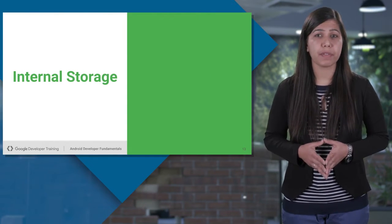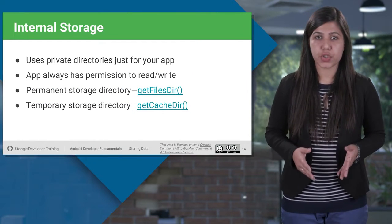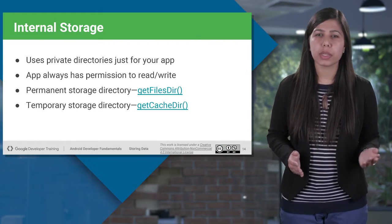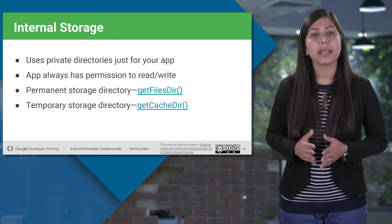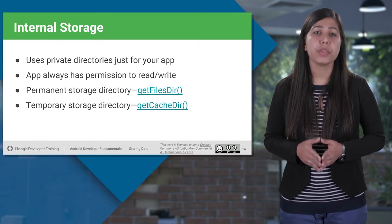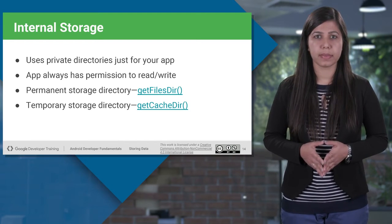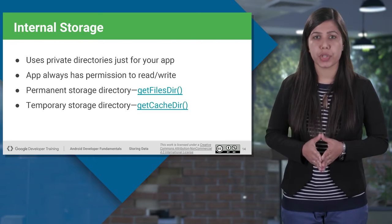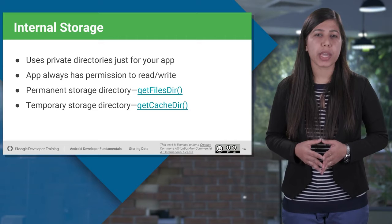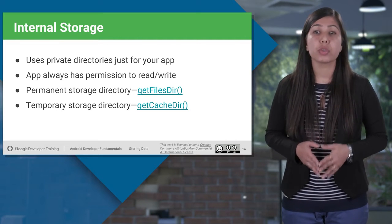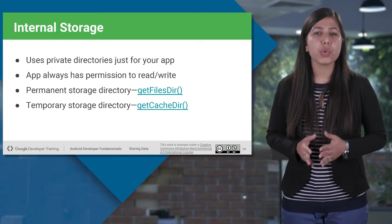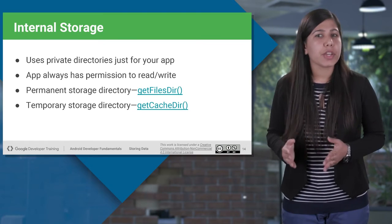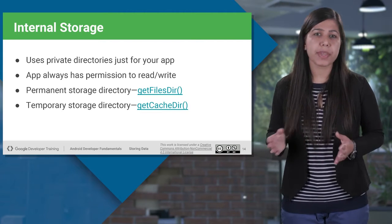Each application has its own private internal storage to save files, and neither other apps nor the user can access them. Files saved in internal storage are accessible only to your app by default with readable and writable permissions. The last two lines on screen show how to get the path of the permanent and temporary storage directory. To save files on internal storage, acquire a directory by calling context.getFilesDir(), and call getCacheDir() to get the absolute path of your app's temp cache files.